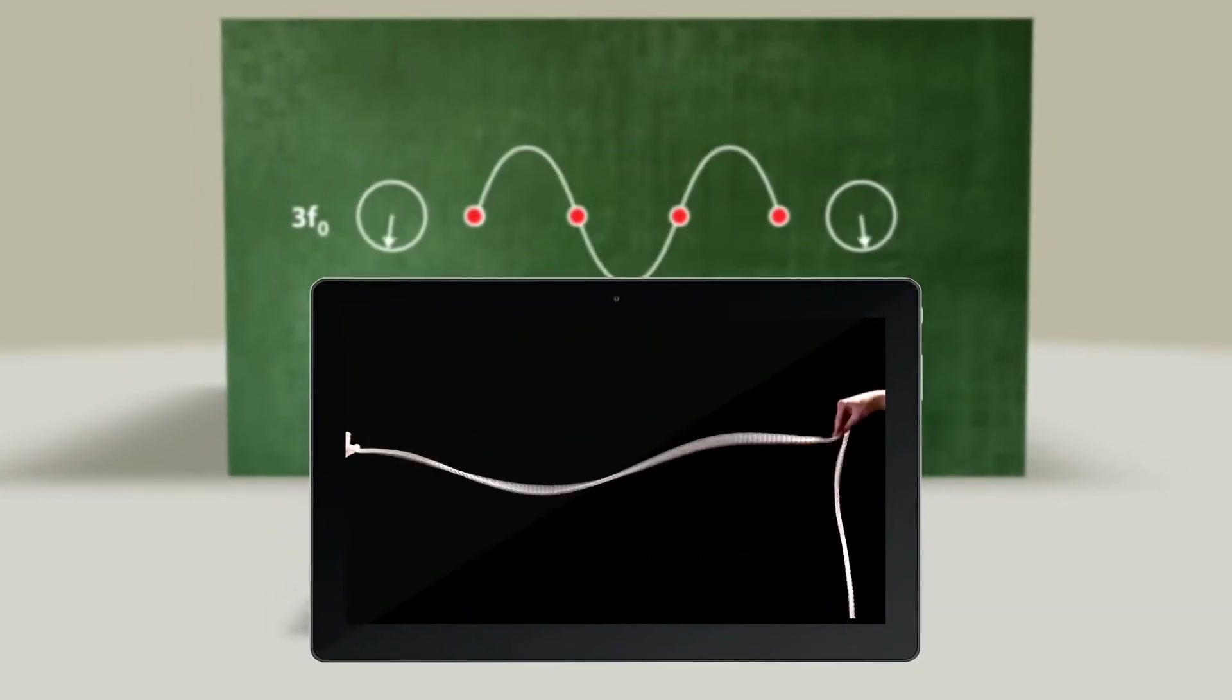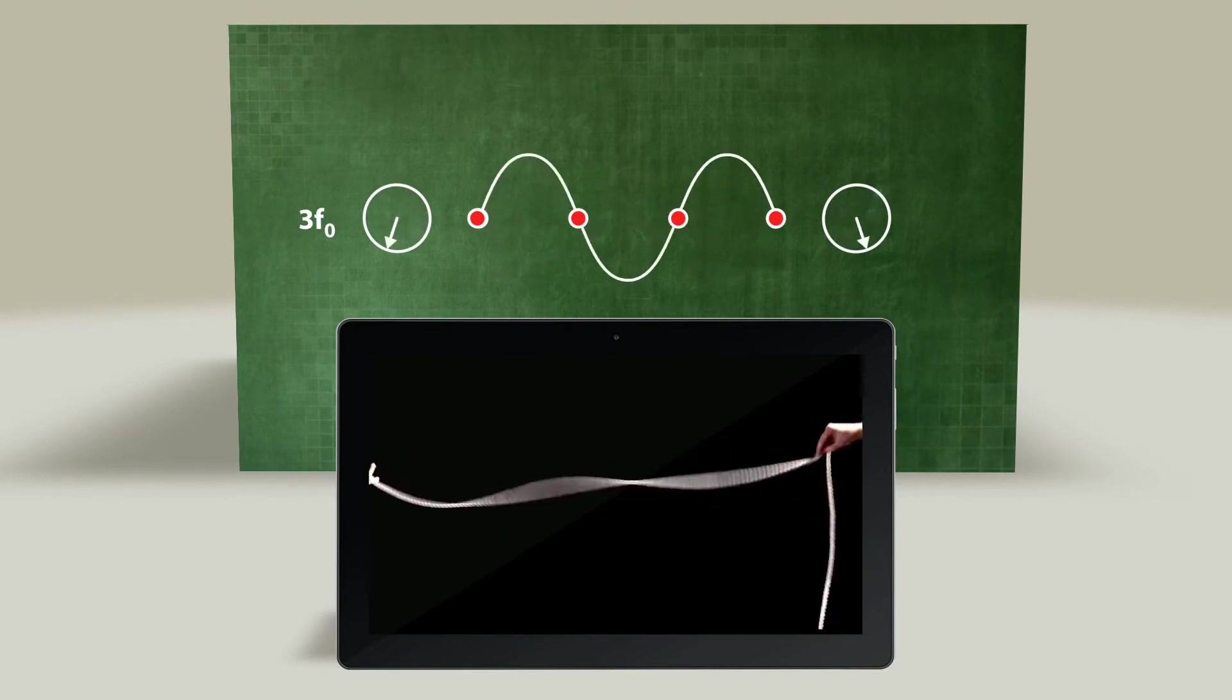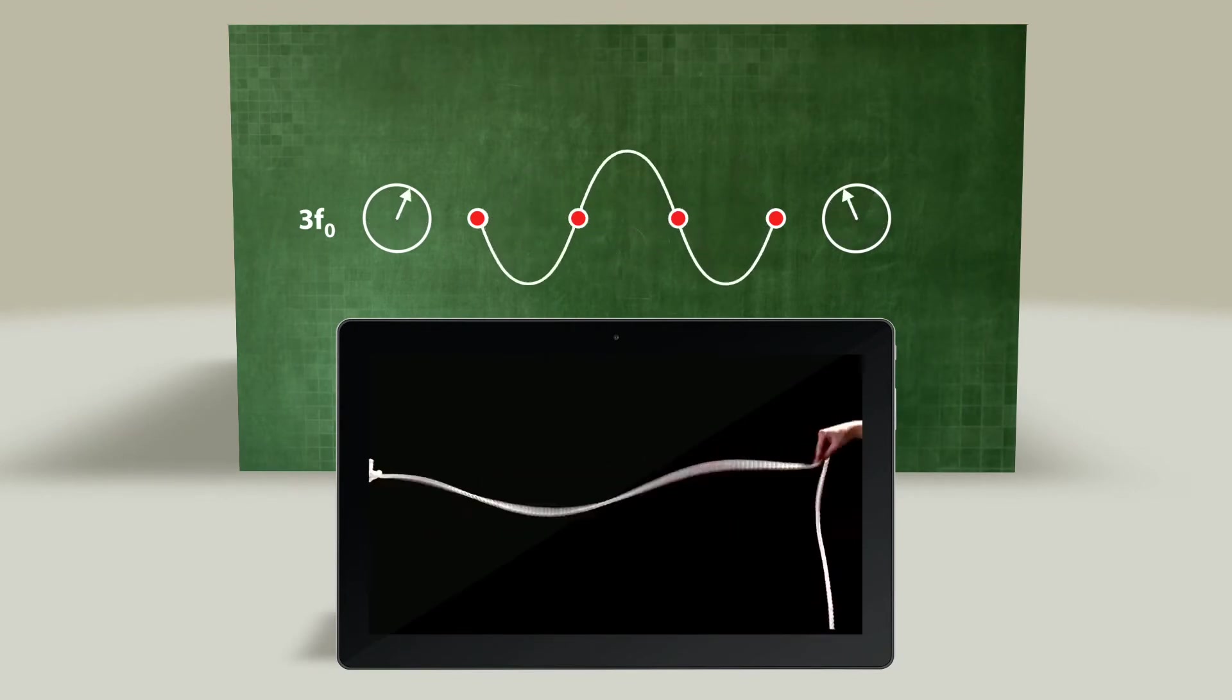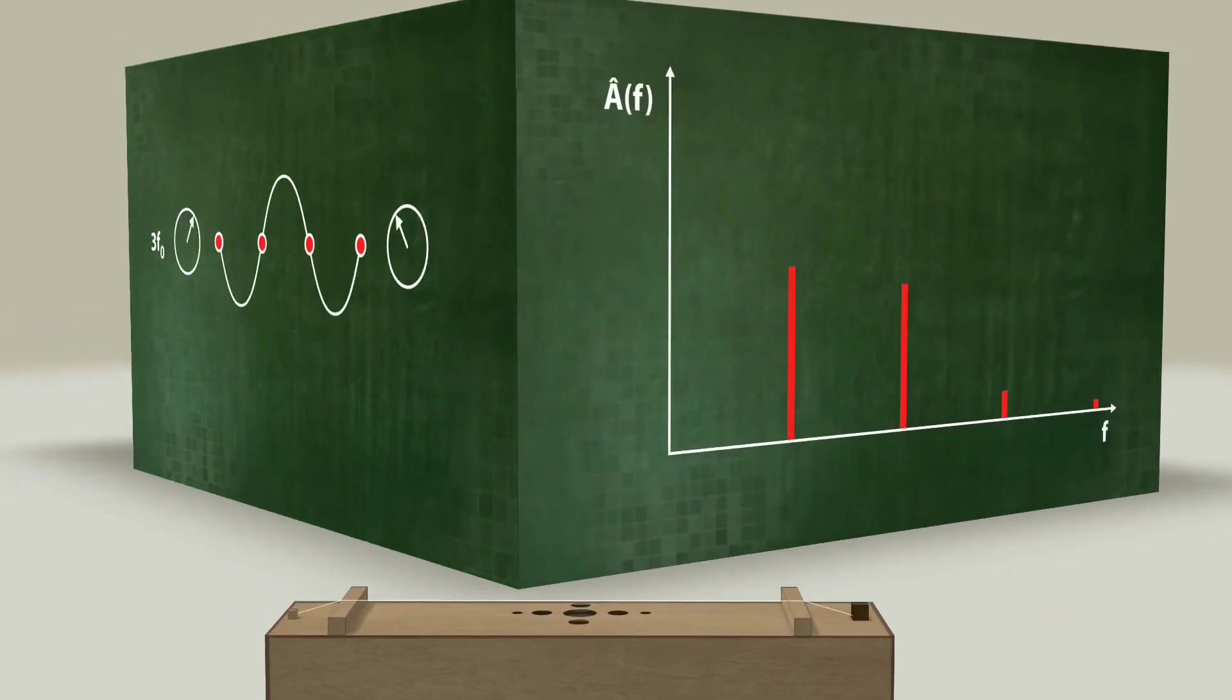The wavelength is reduced again when the frequency is tripled. There is exactly one additional antinode on the vibrating string. And correspondingly, there is also another node.